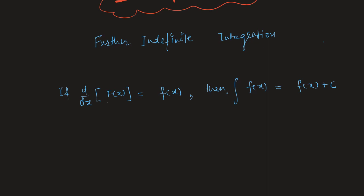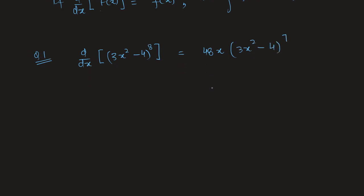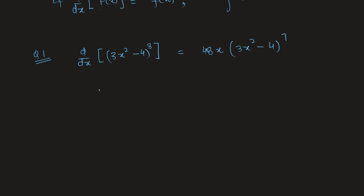To build on this idea, let's take Example 1: show that the differentiation of (3x² - 4)⁸ is equal to 48x(3x² - 4)⁷.